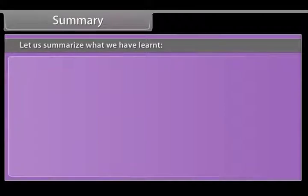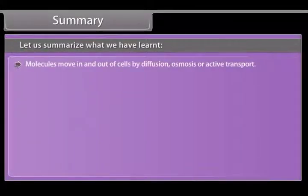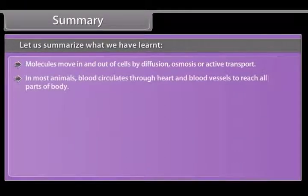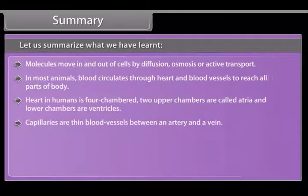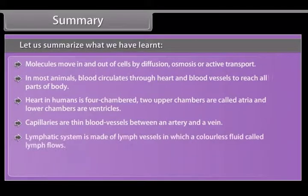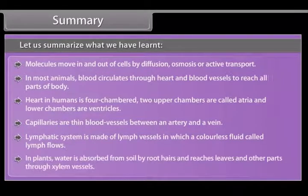Summary. Let us summarize what we have learned. Molecules move in and out of cells by diffusion, osmosis or active transport. In most animals, blood circulates through heart and blood vessels to reach all parts of body. Heart in humans is four-chambered: two upper chambers are called atria and lower chambers are ventricles. Capillaries are thin blood vessels between an artery and a vein. Lymphatic system is made of lymph vessels in which a colorless fluid called lymph flows. In plants, water is absorbed from soil by root hairs and reaches leaves and other parts through xylem vessels.